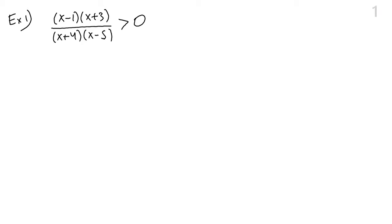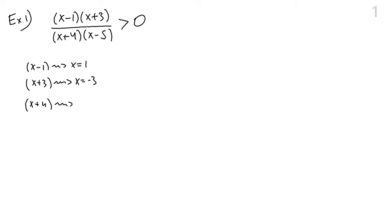The only way something can change sign is when either the numerator equals zero or the denominator equals zero. When the numerator equals zero, this expression may go from positive to negative there. When the denominator is zero, this expression does not have those numbers in the domain — that's also a potential place for the expression to change sign. So the factor x minus one gives us x equals one, the factor x plus three gives us x equals negative three, and the factor x plus four gives us x equals negative four — all potential points where the sign can change.